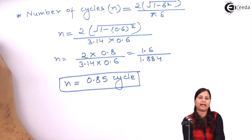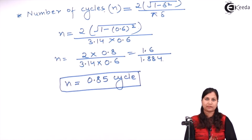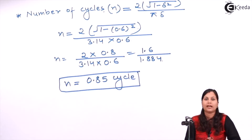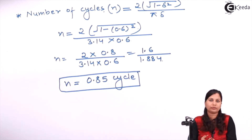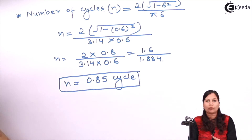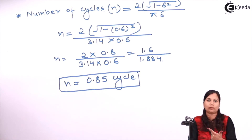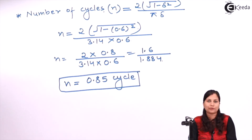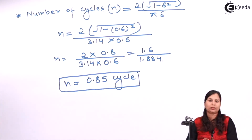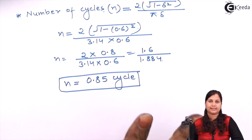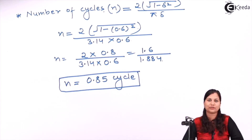In this problem we have calculated all the transient response specifications for the given system. Whenever you have to find transient response specifications, first find the characteristic equation — from it you get δ (damping ratio) and ωn (natural frequency). Then substitute these values into the formulas for all transient response specifications to find the complete time response of the system.